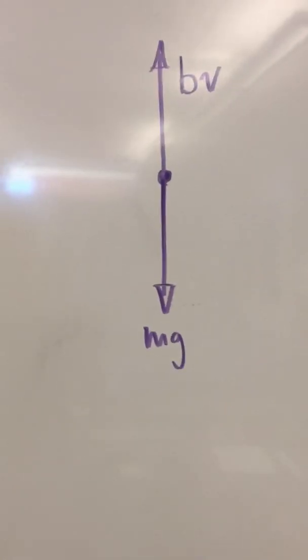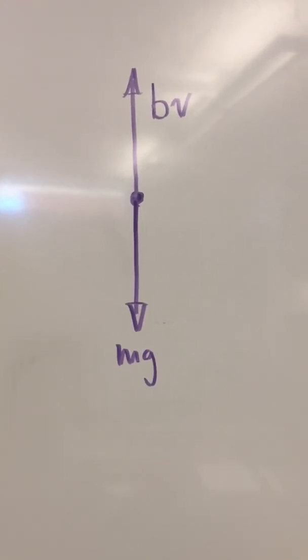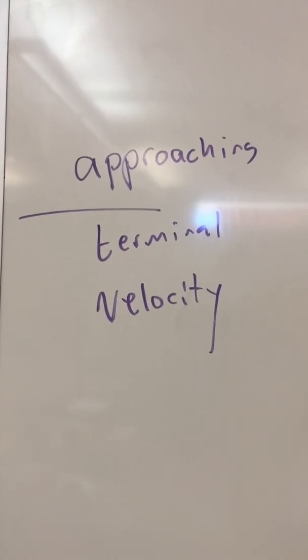When those forces in opposite directions are equal, that doesn't mean the object stops moving, it means it stops accelerating at that point. And if it stops accelerating then it reaches its final velocity, its terminal velocity.